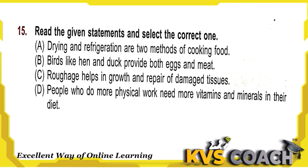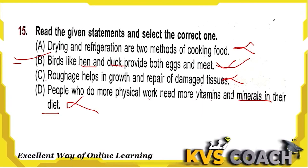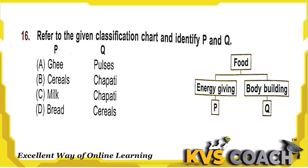Question 15: Read the given statements and select the correct one. Statement A: Drying and refrigeration are not two methods of cooking food — wrong, they are preservation methods, which makes the statement somewhat correct in wording but the content is tricky. Statement B: Birds like hen and duck provide both eggs and meat — correct. Statement C: Roughage helps in growth and repair of damaged tissue — wrong. Statement D: People who do more physical work need more vitamins and minerals — wrong, they need more energy-giving food. Option B is the only correct statement.